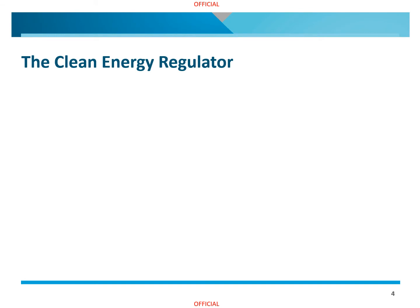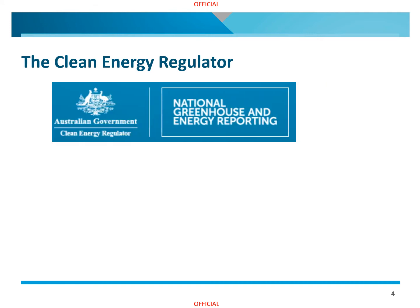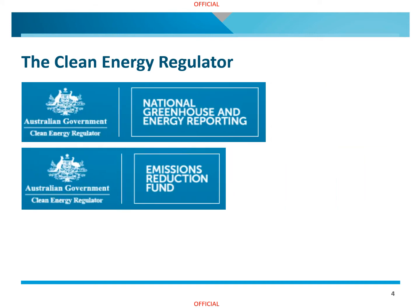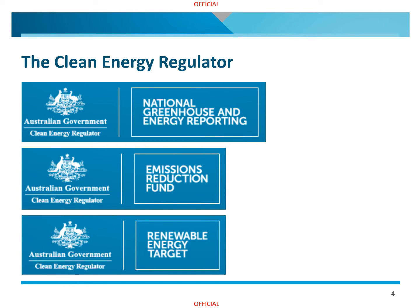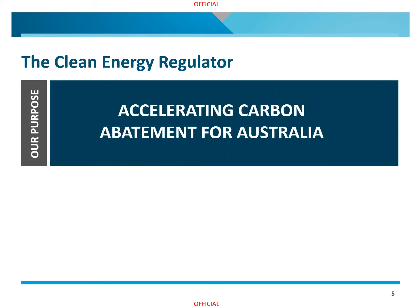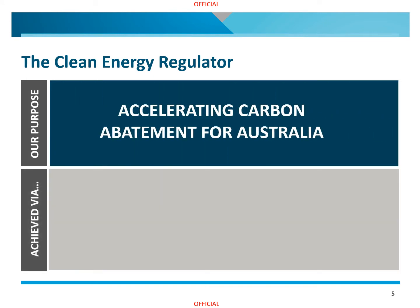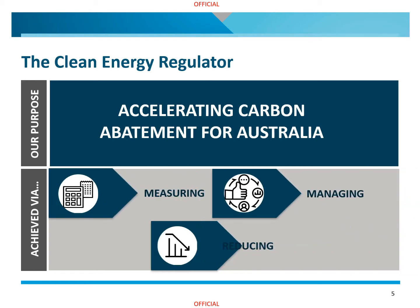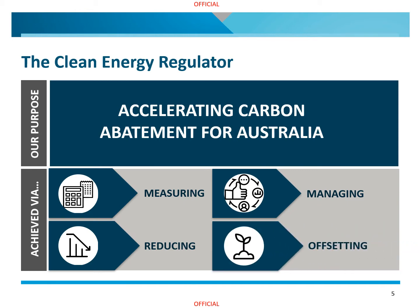Established in 2012, the Clean Energy Regulator is an independent statutory authority that sits within the portfolio of the Department of Industry, Science, Energy and Resources. We administer several schemes relating to emissions reduction and renewable energy. These include the NGER scheme, the Emissions Reduction Fund and the Renewable Energy Target. Our overarching purpose is to accelerate carbon abatement for Australia. We achieve this through administering Australian government legislation for measuring, managing, reducing and offsetting Australia's carbon emissions.